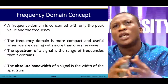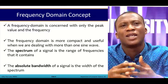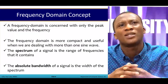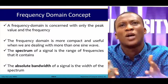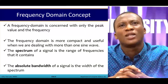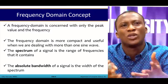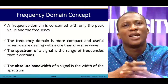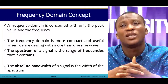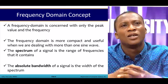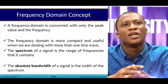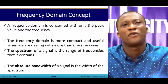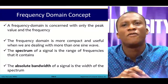The frequency domain concept is concerned with only the peak value and the frequencies. Here, varying frequencies come into play, and the frequency domain is more compact and useful when dealing with more than one sine wave. The spectrum of a signal is the range of frequencies that it contains. In Ghana, for example, we have a spectrum from which various radio and TV stations pick their signals. The absolute bandwidth of a signal is the width of this spectrum.